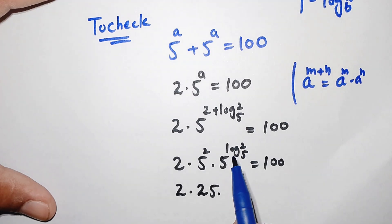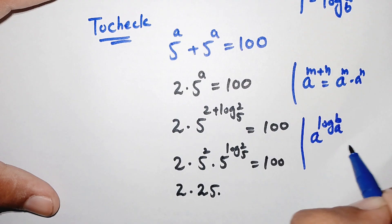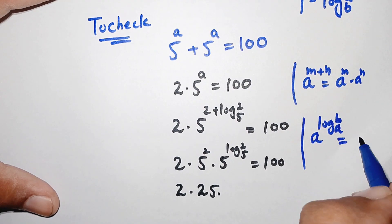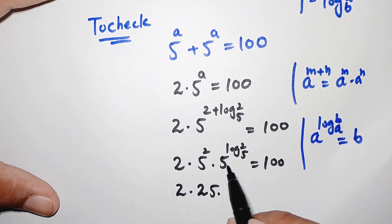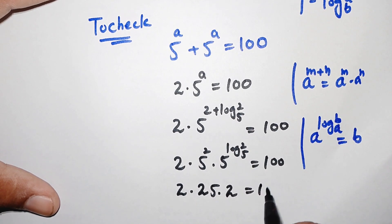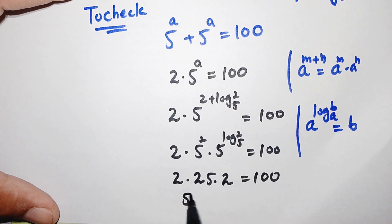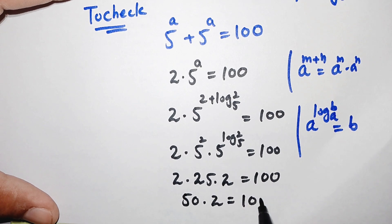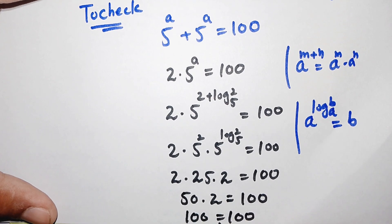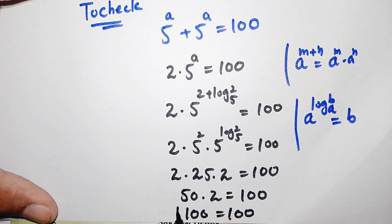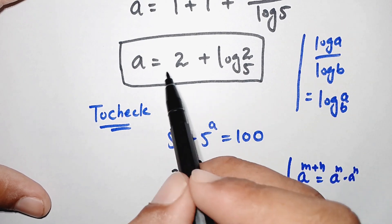We apply the logarithm rule: a to the power of log of b with base a equals b. Here b equals 2, so 5 to the power of log of 2 base 5 equals 2. Therefore 2 times 25 times 2 equals 50 times 2 equals 100, which equals 100. The left-hand side equals the right-hand side, confirming the answer is correct.